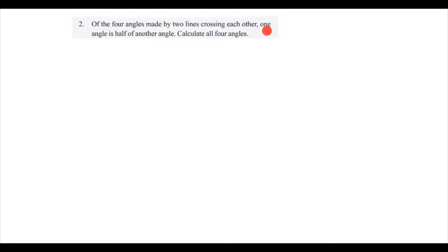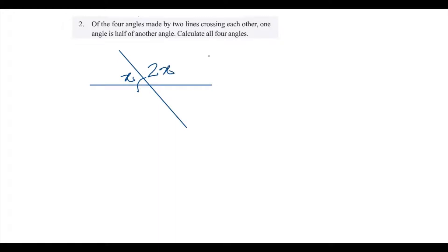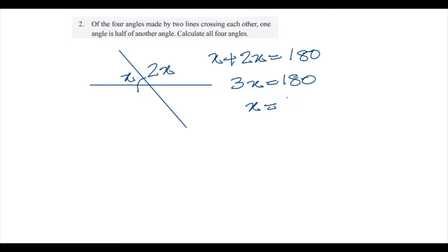In this question, four angles are made by two lines crossing each other, and one angle is half of the other. We need to find all four angles. Let one angle be x and the other be 2x. These two angles form a linear pair, so x plus 2x equals 180 degrees. That is 3x equals 180 degrees, so x equals 60 degrees.